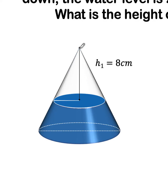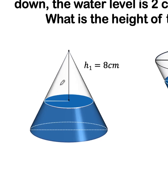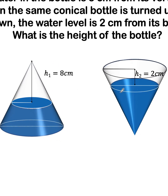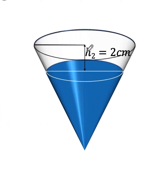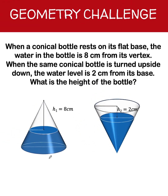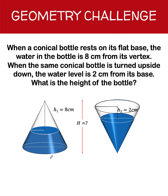So from the tip of the cone to the water level, the height h₁ is 8 centimeters. Now, we turn this bottle upside down like in the figure at the right, and this time the distance from the base of the upside-down bottle to the water level is h₂ equals 2 centimeters. We would like to find the height of this bottle.